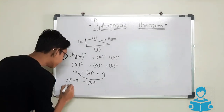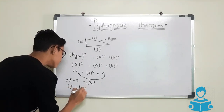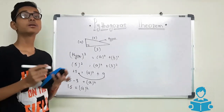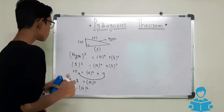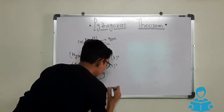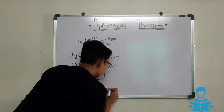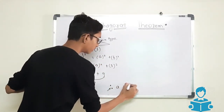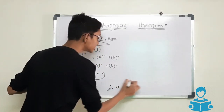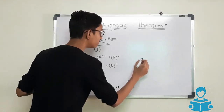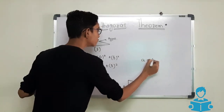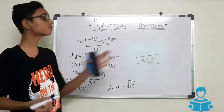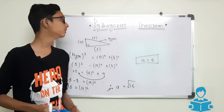25 minus 9 is 16. So 16 is equals to A square, meaning the square of A is 16. But we have to find the value of A. Therefore, A is equals to square root of 16. The square root of 16 is 4, so the value of A is 4.